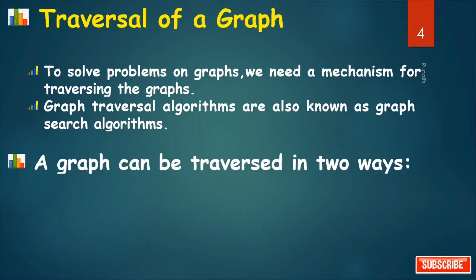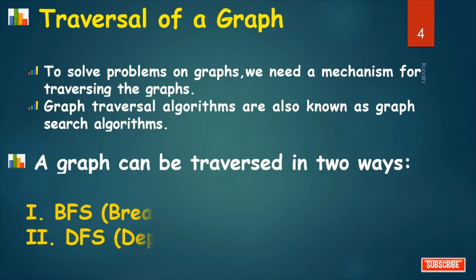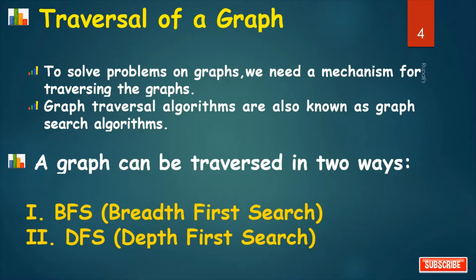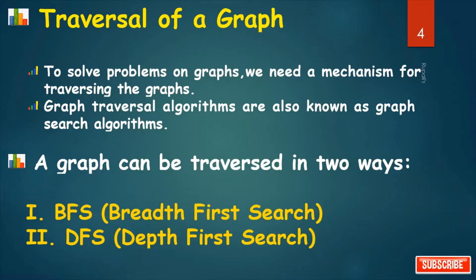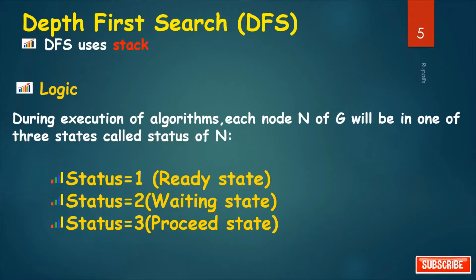A graph can be traversed in two ways. First is BFS, that is breadth first search. Second is DFS, that is depth first search.